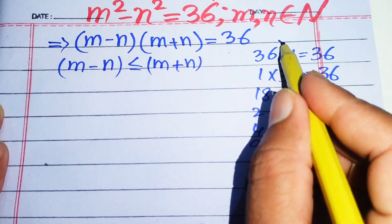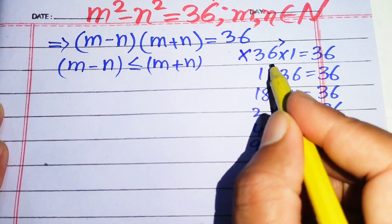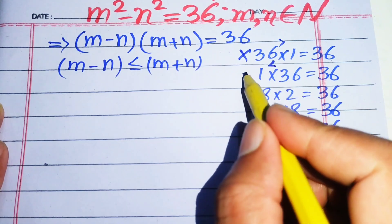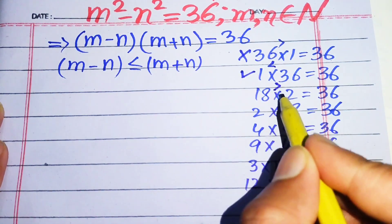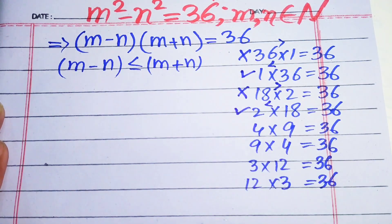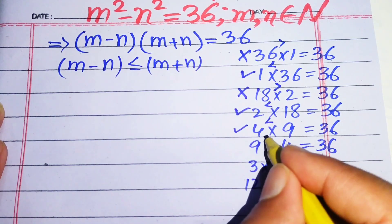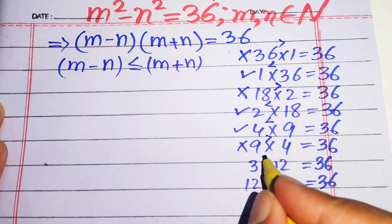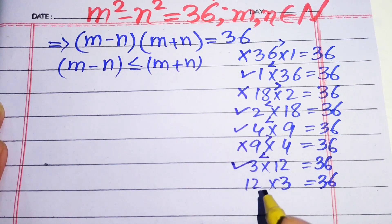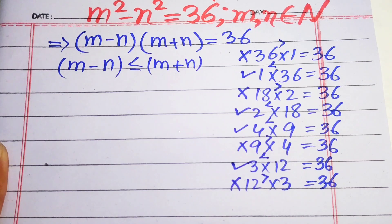Applying this condition: 36 > 1 so we reject that pair; 1 < 36 so we accept it. 18 > 2 so we reject that; 2 < 18 so we accept it. 4 < 9 so we accept it; 9 > 4 so we reject it. 3 < 12 so we accept it; 12 > 3 so we reject it. We are left with 4 cases that satisfy this condition, and we will find m and n for each.